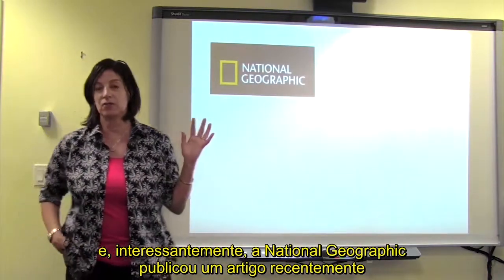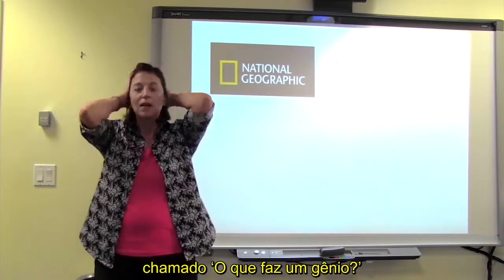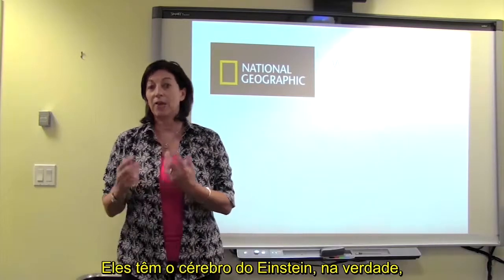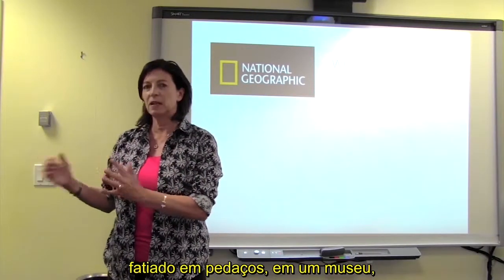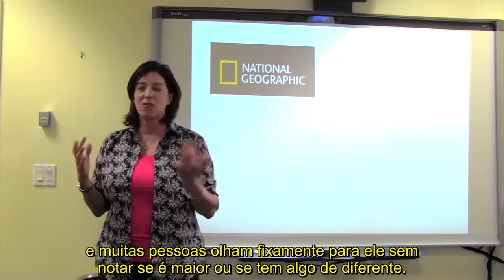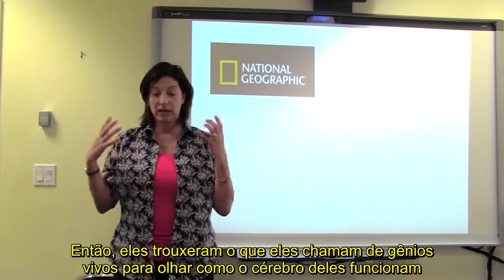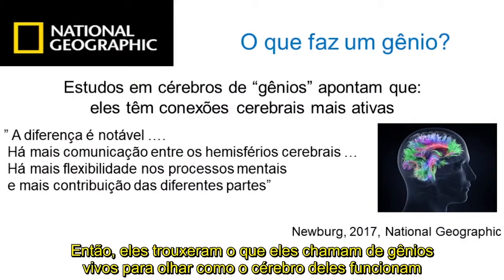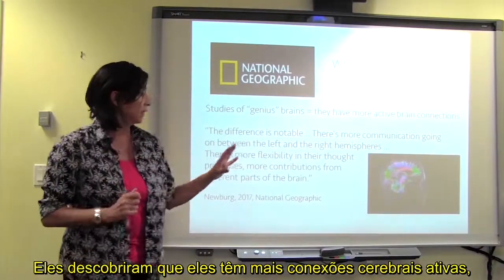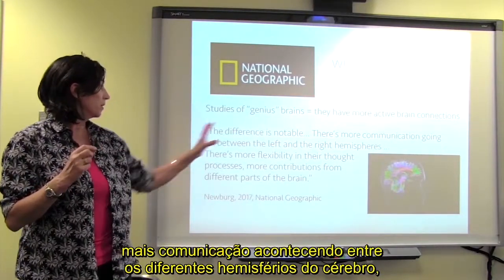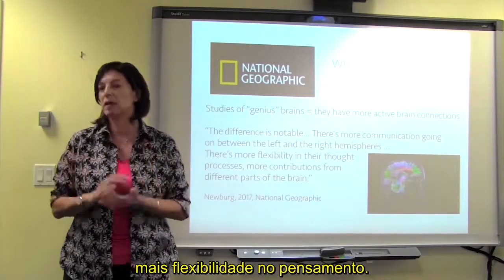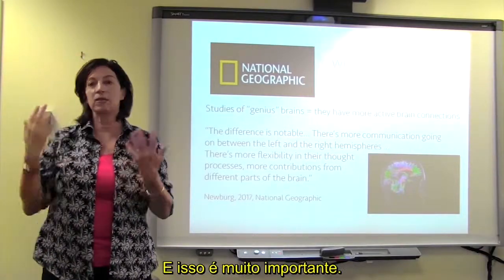Interestingly, National Geographic published an article called 'What Makes a Genius?' People are fascinated by this — they actually have Einstein's brain cut up in slices in a museum. When they bring in living people considered geniuses to look at how their brains work, what they find is that they have more active brain connections, more communication between the different hemispheres, and more flexibility in thinking. And that's really important.